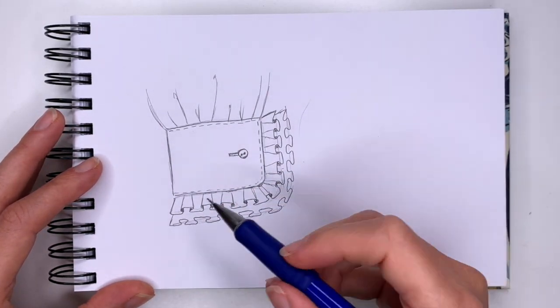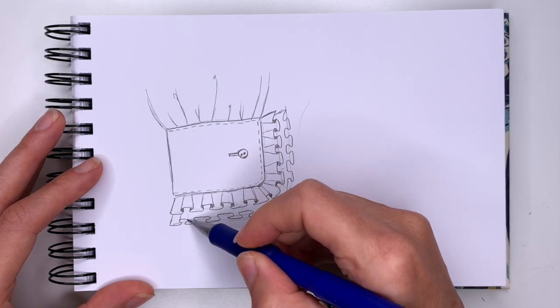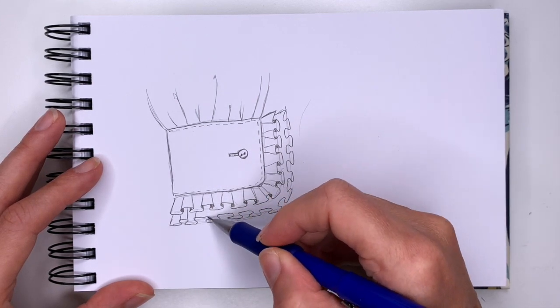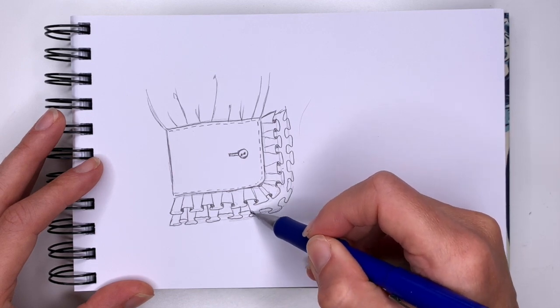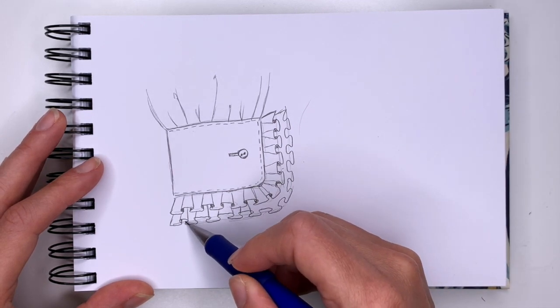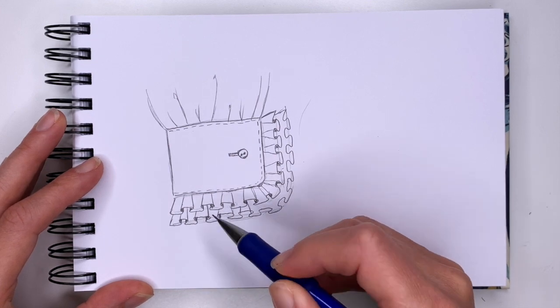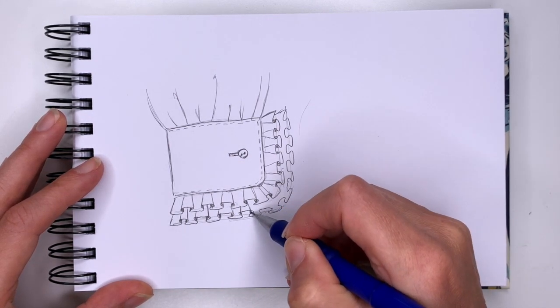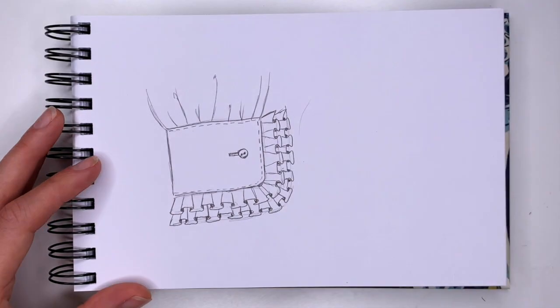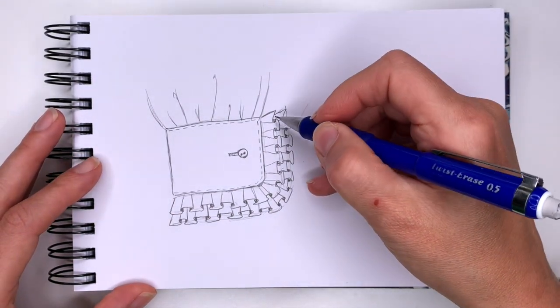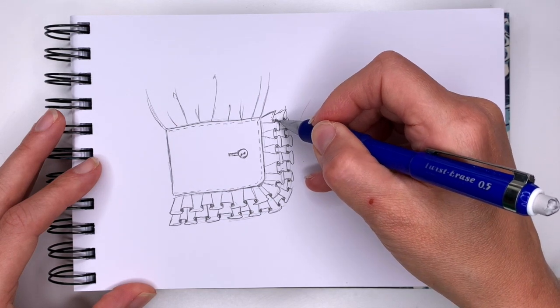And then same thing like last time, we can connect these lines, make them go under the other ruffles. And then darken corners. Now you can add more details to it. You can add some lines on these.